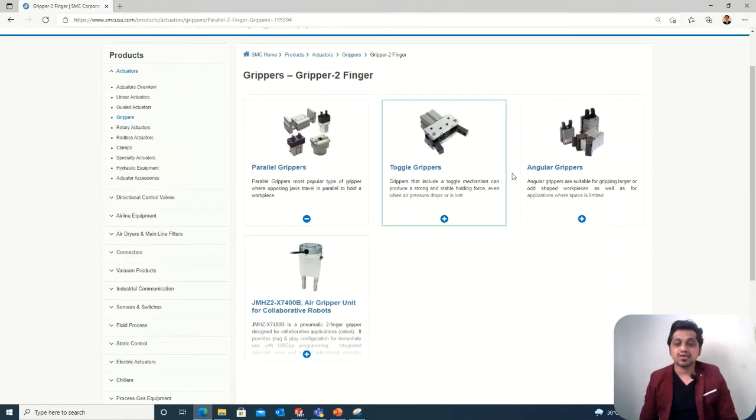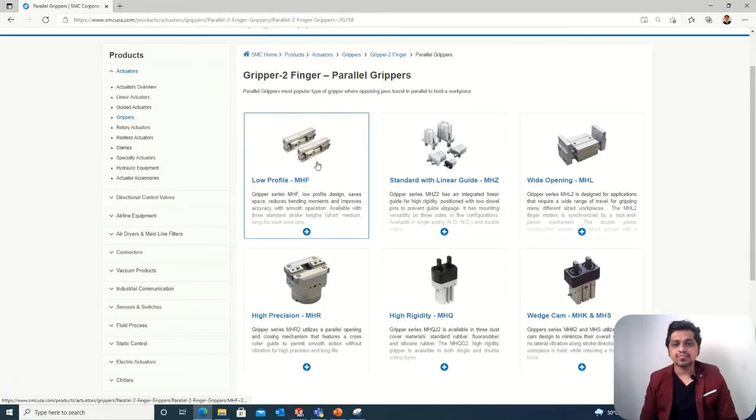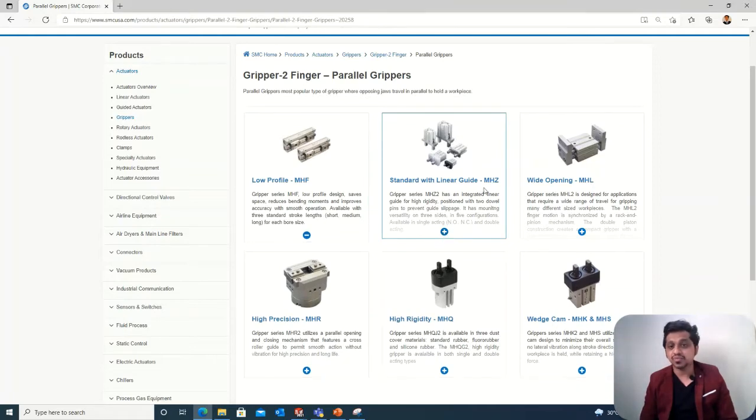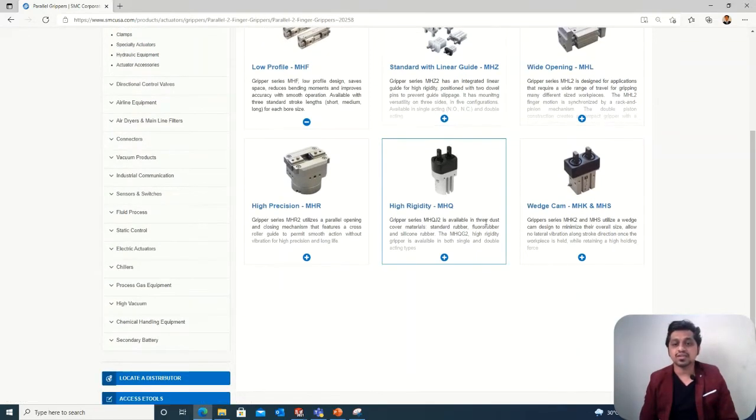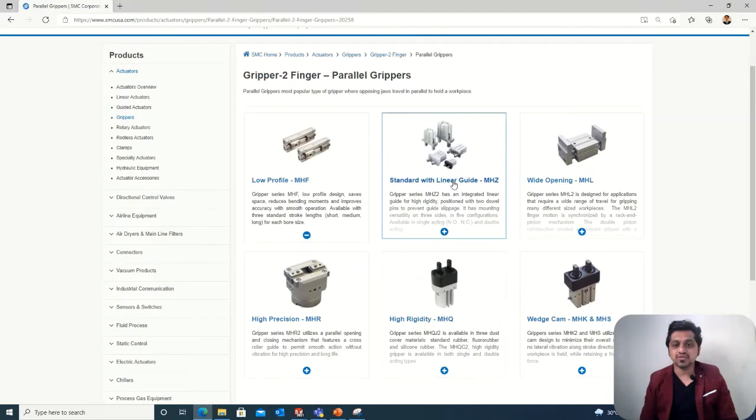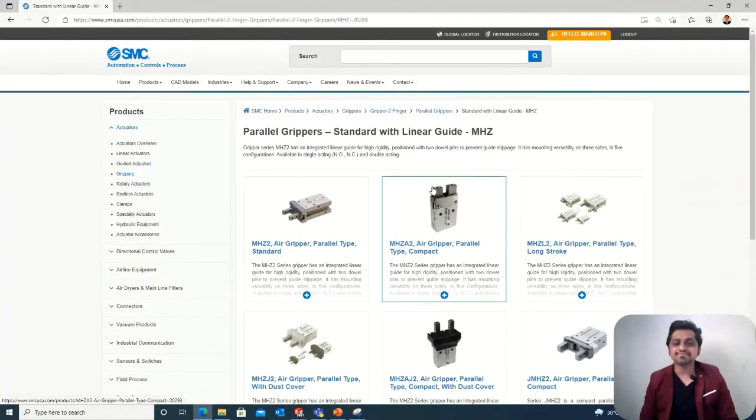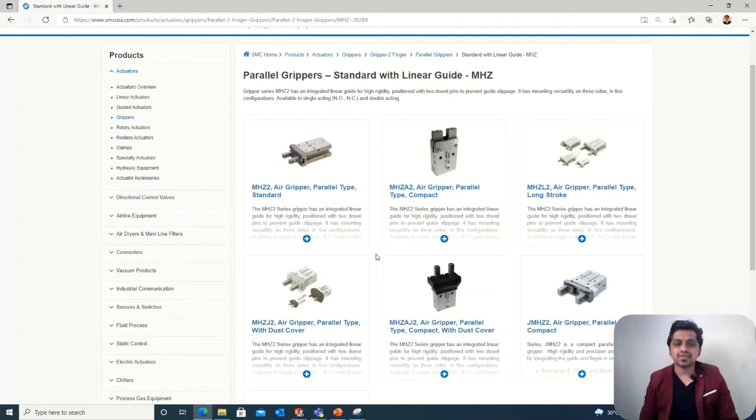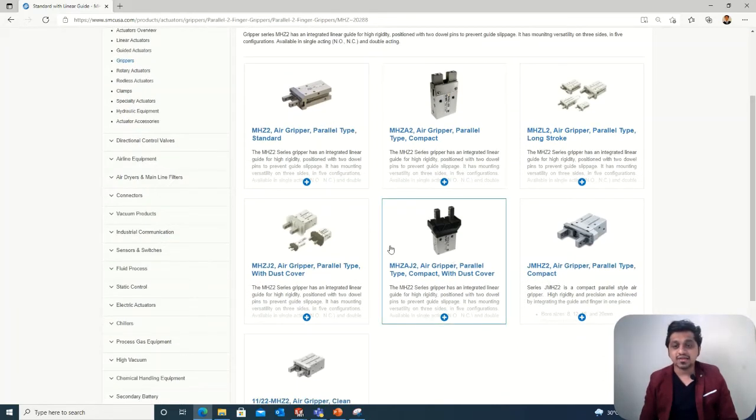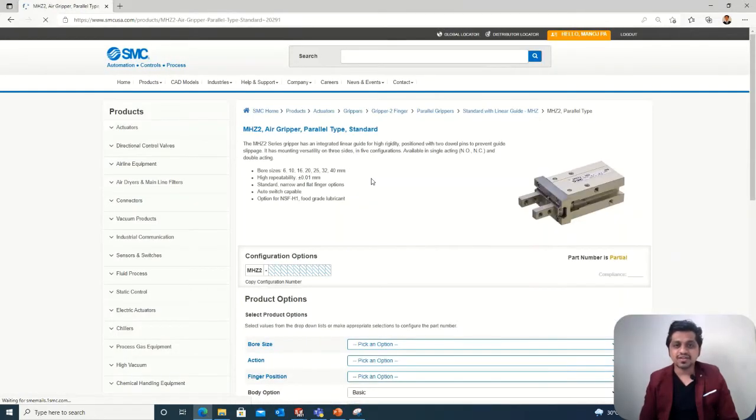We'll go with the two-finger gripper. In two-finger gripper, you can also find different types according to the application. We'll see some basic calculations of the parallel grippers. Parallel grippers have different types again - you can read what their specifications are and how they can be used. We'll go with the standard linear guide type.